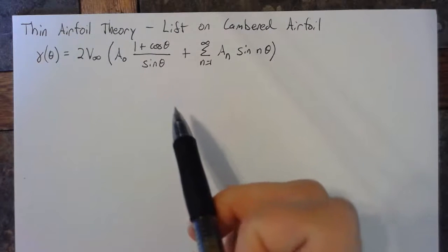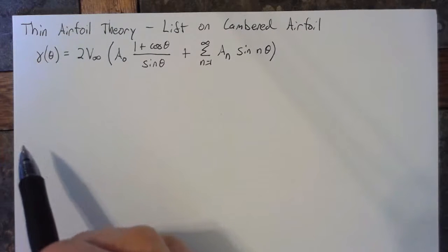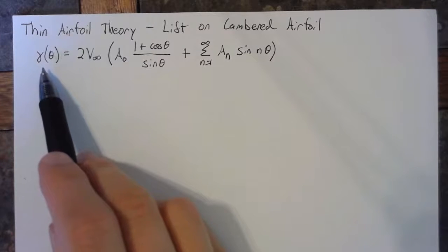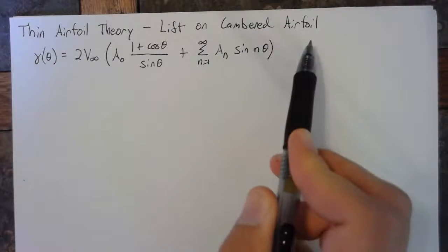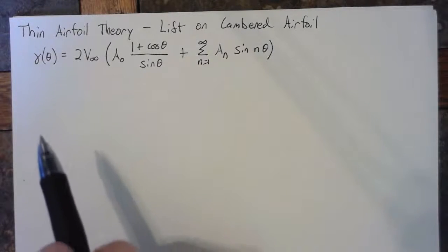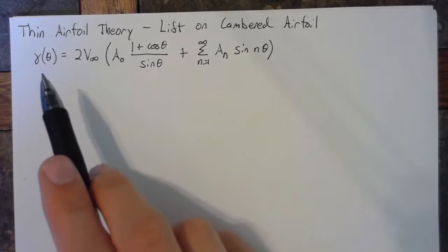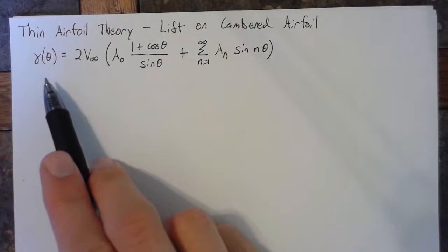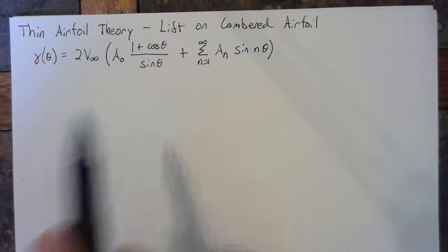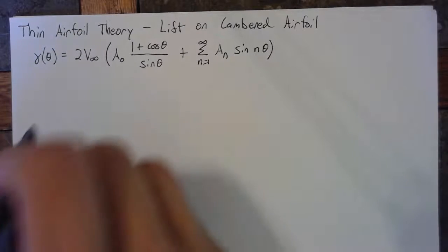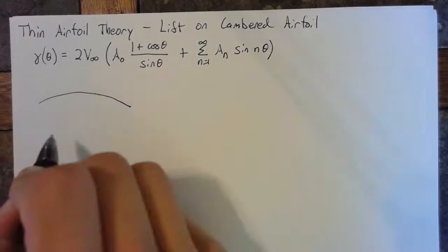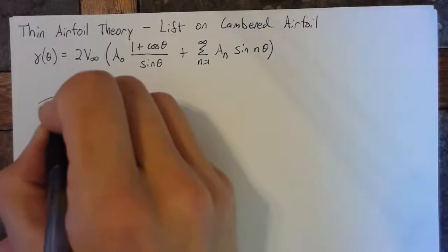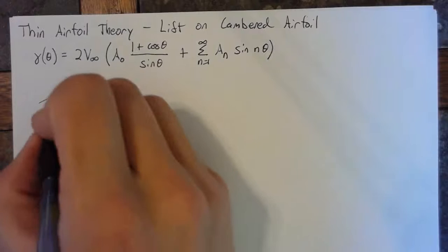Howdy. In the previous lesson, we derived an equation for the vortex strength distribution over the vortex sheet of a cambered airfoil. In this lesson, we're going to use this vortex strength distribution to find the lift on that cambered airfoil. Once again, we'll have some camber to our airfoil, and we'll represent this as a vortex sheet.